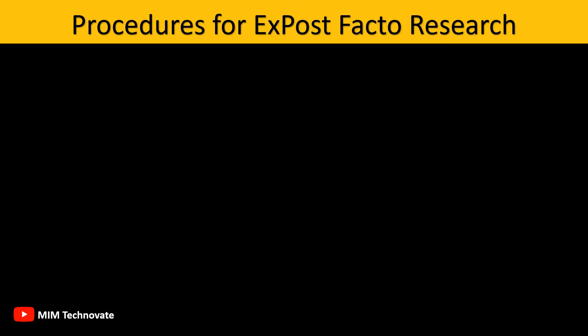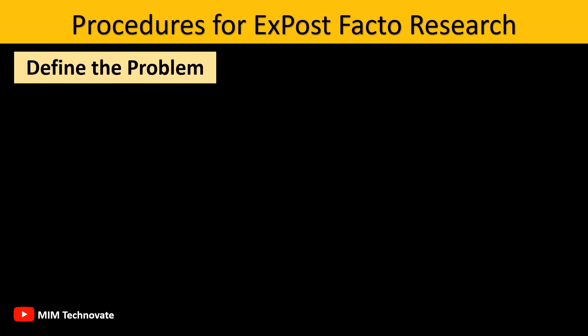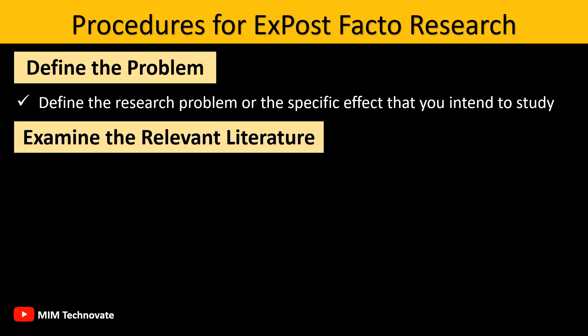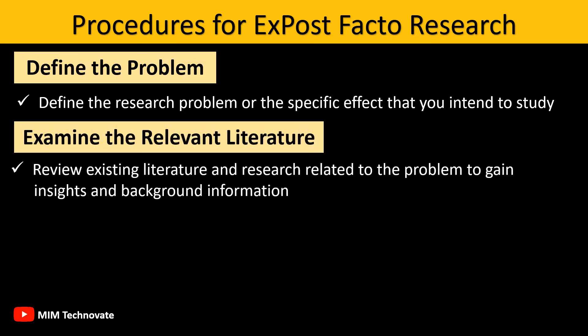Procedures for Ex-Post-Facto Research. Step 1 — Define the Problem: The first step is to clearly define the research problem or the specific effect that you intend to study. Step 2 — Examine the Relevant Literature: Review existing literature and research related to the problem to gain insights and background information.